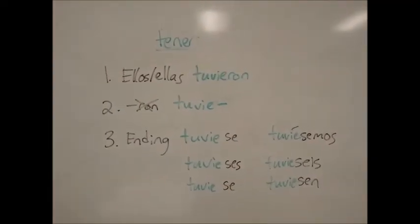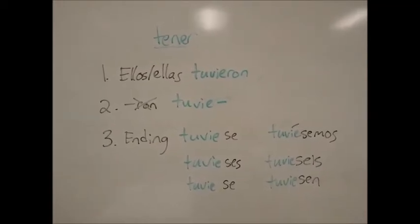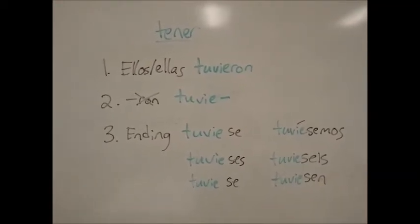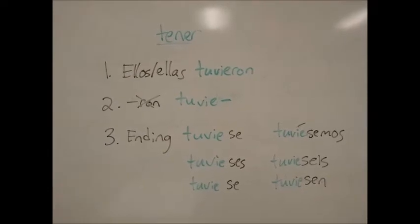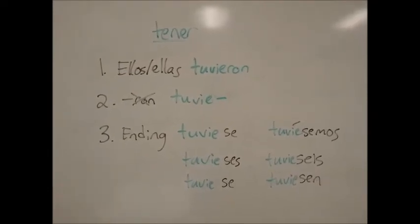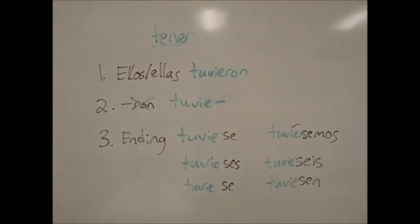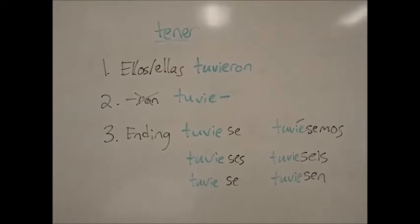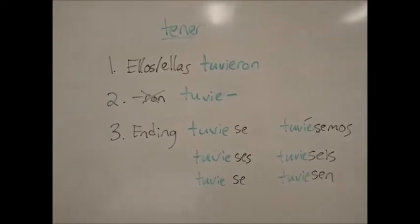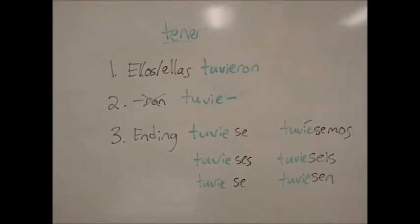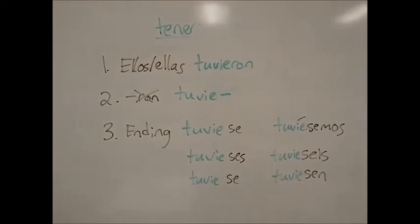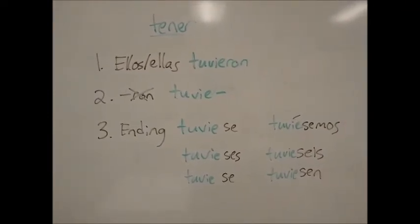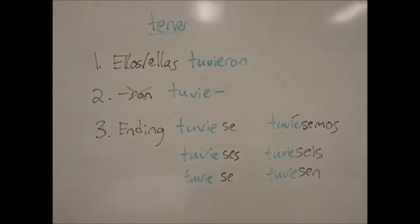Now here's an example with the verb TENER, which is irregular in the preterite tense. The Ellos, Ellas, Ustedes conjugation is TUVIERON, and that changes step two. We take off the RON and get TUVIER. When we add the ending, we get TUVIESE, TUVIESES, TUVIESE, TUVIÉSEMOS, TUVIESEIS, and TUVIESEN.